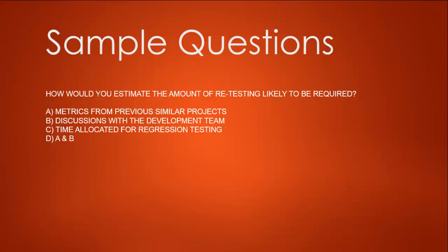So let's go through that. Metrics from previous similar projects definitely helps amount of time it takes for retesting. Discussion with development team also helps. Time allocated for regression doesn't help because we are doing retesting. So the option D that says A and B sounds closer. So our option here is D.